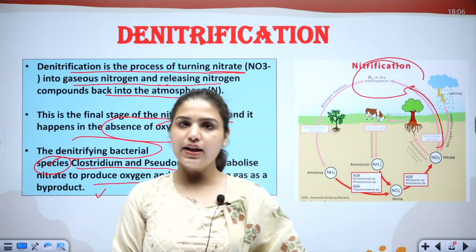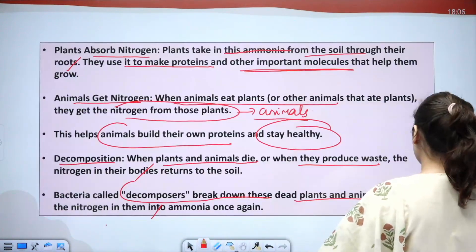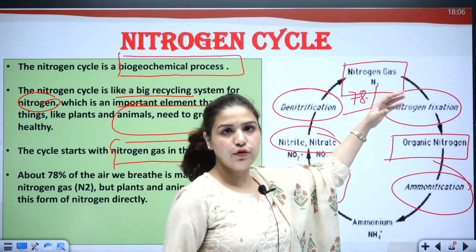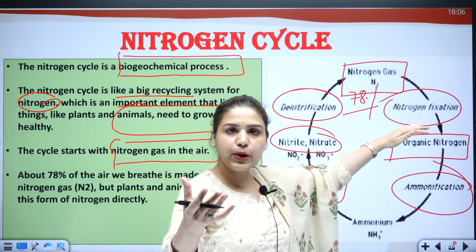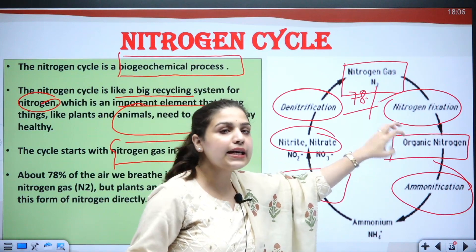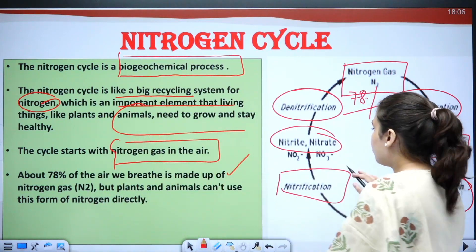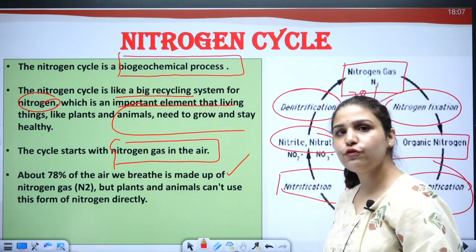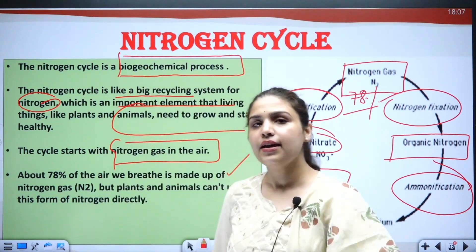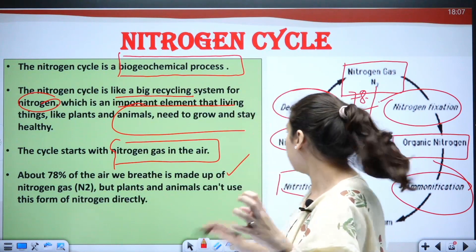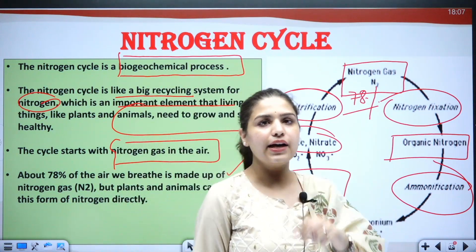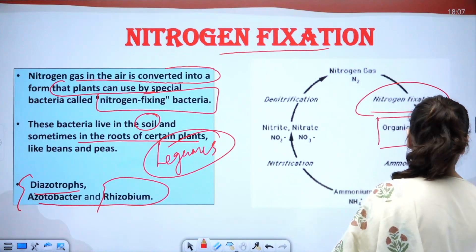The denitrifying bacterial species — clostridium and pseudomonas — metabolize the nitrate to produce oxygen and free nitrogen gas as a byproduct. To summarize the cycle: first, nitrogen fixation converts atmospheric nitrogen into organic nitrogen; second, ammonification converts organic nitrogen into ammonia; third, nitrification converts ammonia into nitrite then nitrate in the presence of oxygen; finally, denitrification converts nitrates back into nitrogen gas in the absence of oxygen.